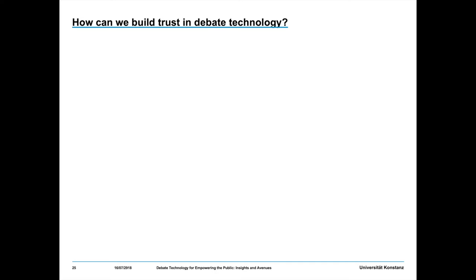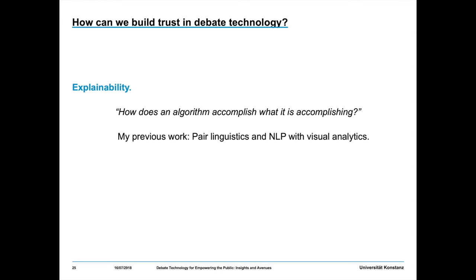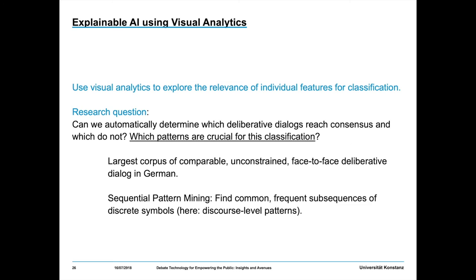One question we are asked basically every time we get in touch with stakeholders is: how can we build trust in debate technology? I usually quote work I've contributed to regarding explainability — how does an algorithm accomplish what it is accomplishing? My previous work in that field paired linguistics and computational linguistics with visual analytics, and there's a strong collaboration here in Constance. We worked towards explainable AI using visual analytics.